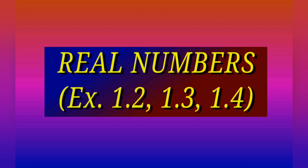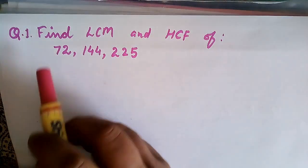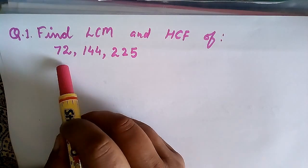Namaste students, today I am going to discuss exercises 1.2, 1.3, and 1.4 of real numbers — that is Chapter 1 of class 10th. Before going to the exercises, you have to remember two properties. Number 1: HCF is the product of smallest power of each common factor, and LCM is the product of greatest power of each prime factor involved in the numbers. In the next exercise we will solve questions using these two properties, so take your notebooks and note down.